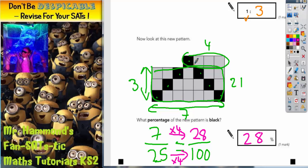Just to recap, there are 7 black squares out of a possible 25. And if we multiply both of these numbers by 4, we'll turn it into something out of 100. 28 out of 100 is 28%.